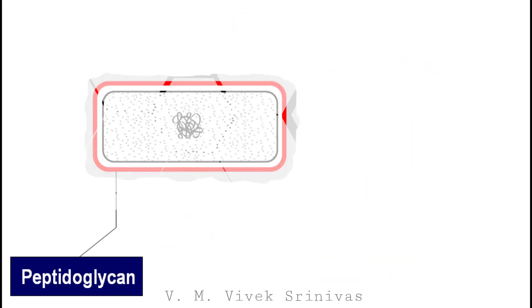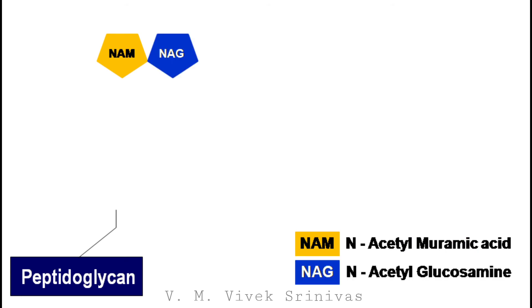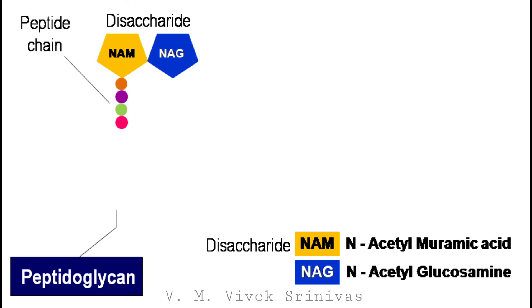This peptidoglycan is composed of N-acetylmuramic acid, abbreviated as NAM, and N-acetylglucosamine, abbreviated as NAG. These two are the disaccharide, which is linked to the polypeptide chain.